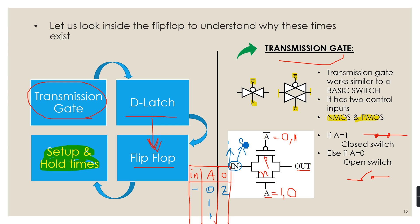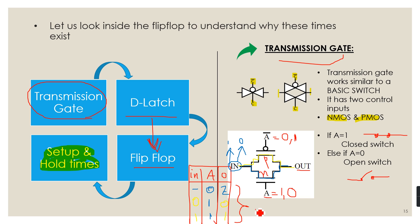Here is the key point: if the input is 0, it will propagate through the NMOS only, because NMOS is good at passing logic 0 — it passes strong logic 0 and weak logic 1. Similarly, if the input is 1, it will propagate through the PMOS only, because PMOS is good at passing logic 1 — it passes strong logic 1 and weak logic 0. This also implies that the transmission gate can act as a tri-state buffer with states 0, 1, and Z.